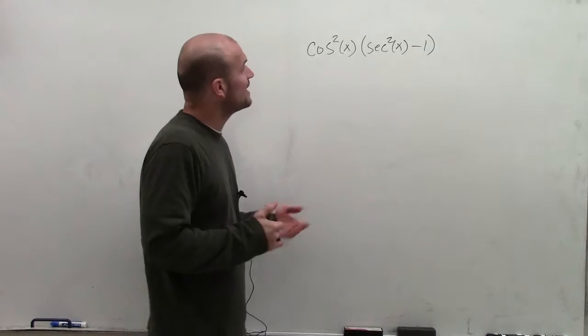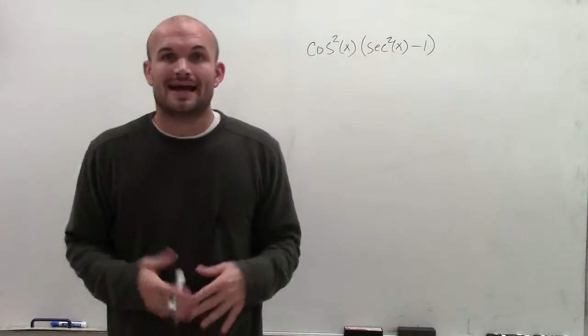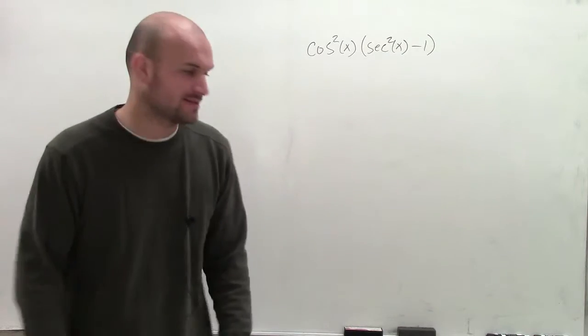Welcome. So what I have is cosine squared x times the secant squared of x minus 1, and what I want to do is simplify this.